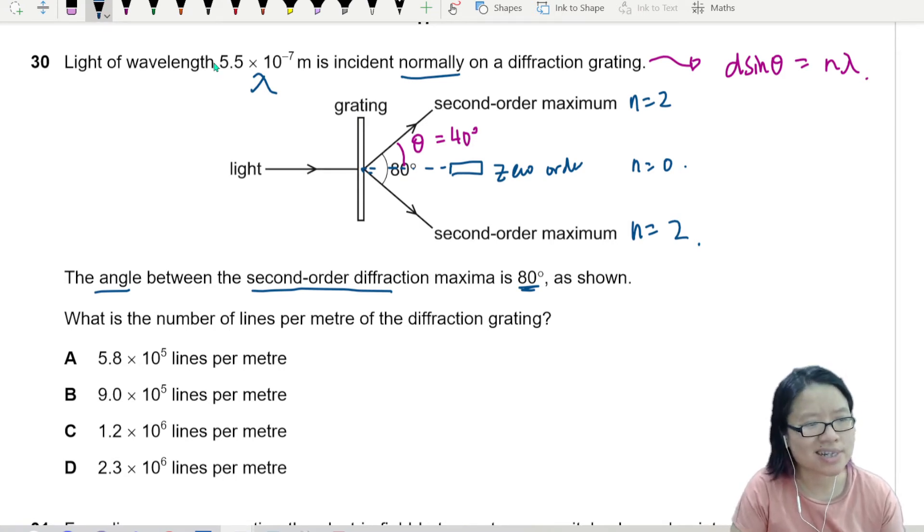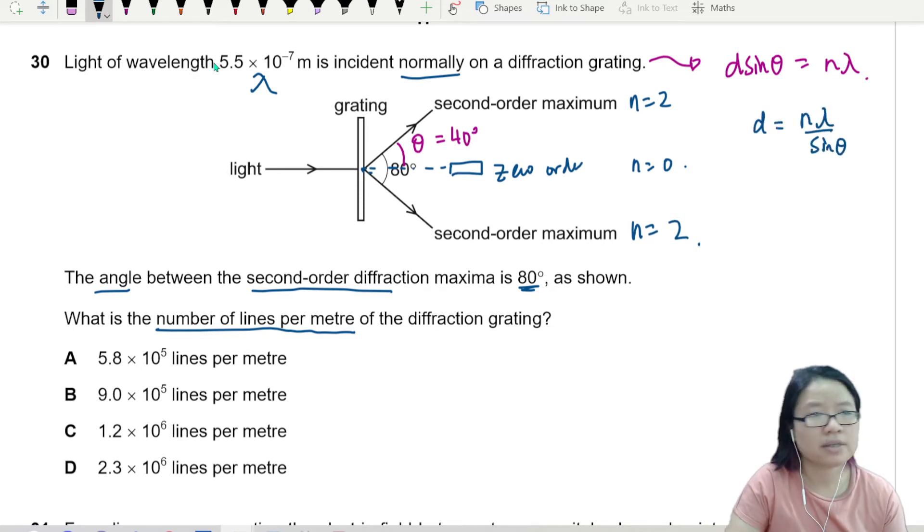So the question is asking us, what is the number of lines per meter? So when I use this equation, this d that I'm looking for - which by the way is n λ over sin θ - this d is actually the number, the distance between two lines.